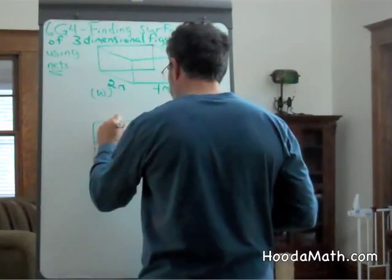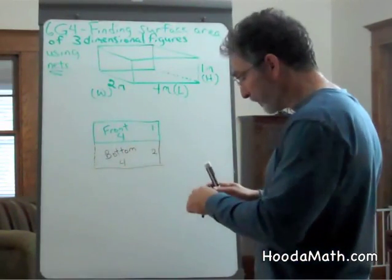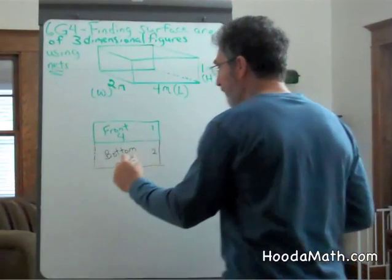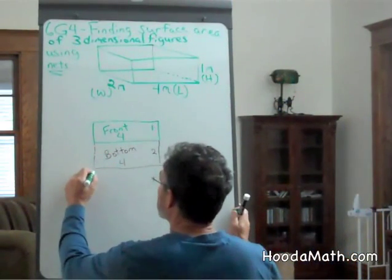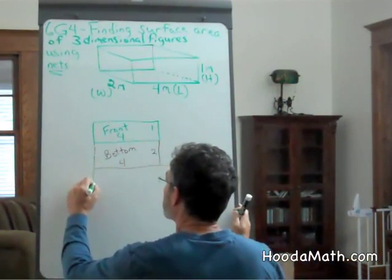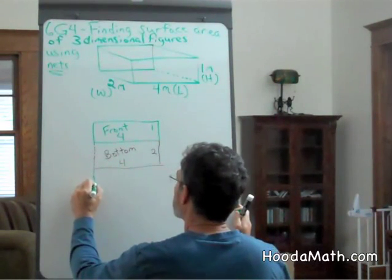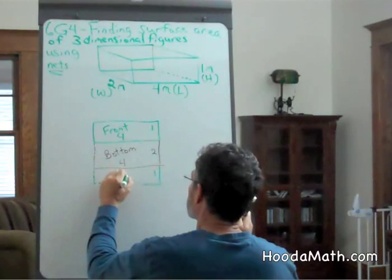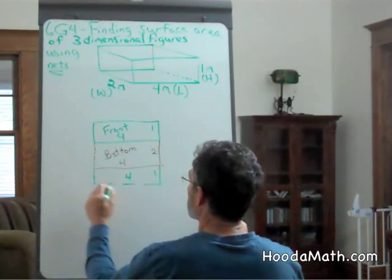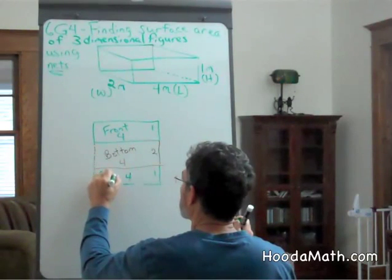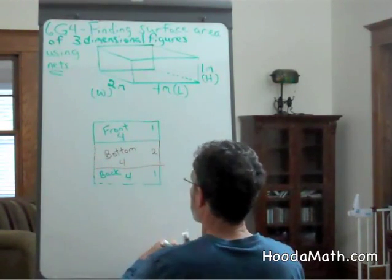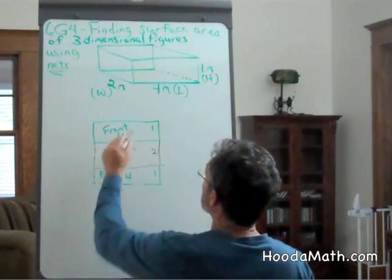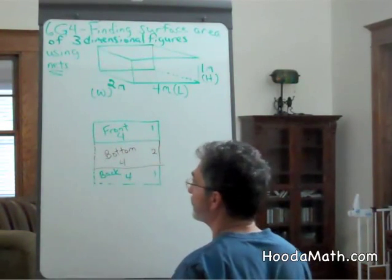Now the front is paired with the back, which has the same dimensions. Four by one. The bottom is paired with the top. They have the same dimensions.